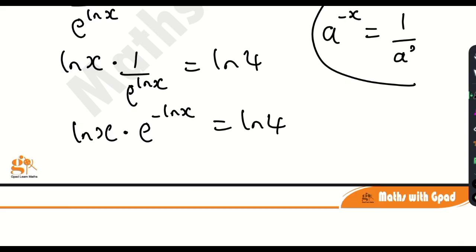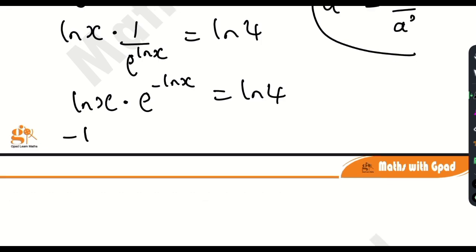You guessed that right. I'm going to multiply both sides by a negative sign. So that will be minus ln x, then e raised by negative ln x is equal to negative ln 4.